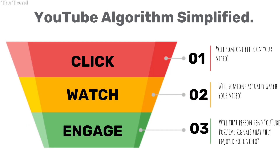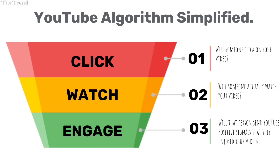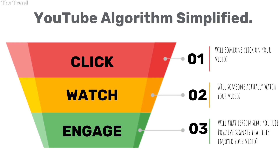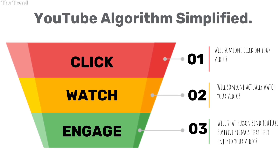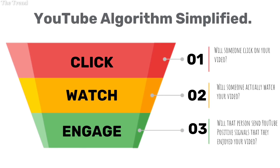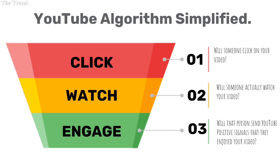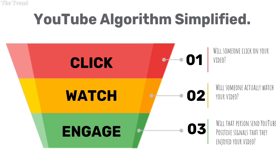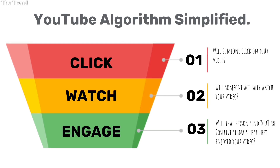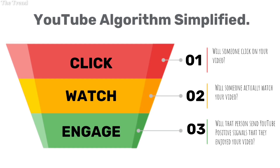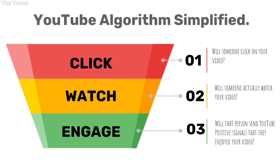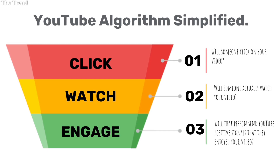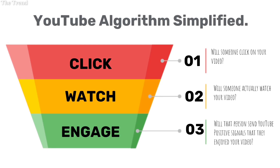You have definitely heard of the YouTube algorithm. This is how it works. First, you are creating a channel and uploading videos. You try hard with finding tags, nice titles, and thumbnails — and all of that is going to come in handy with the algorithm. Let's take an example.